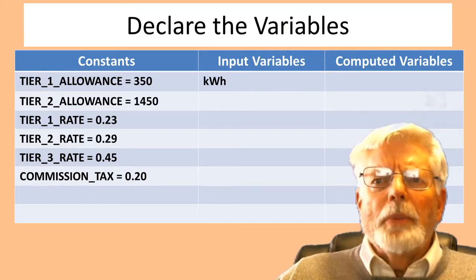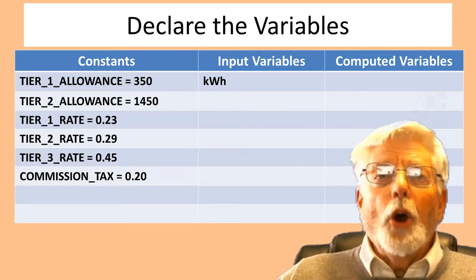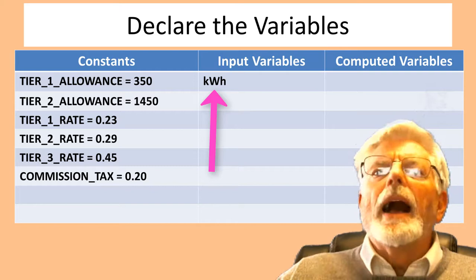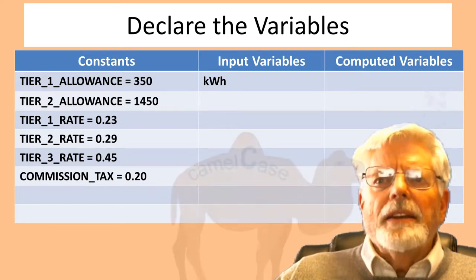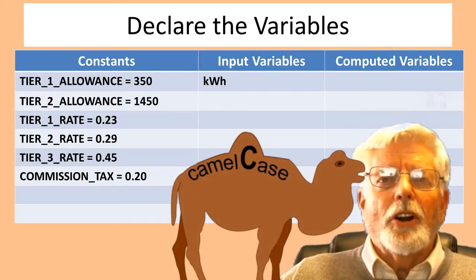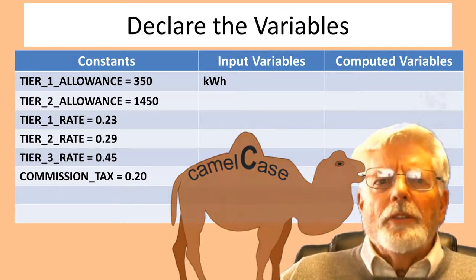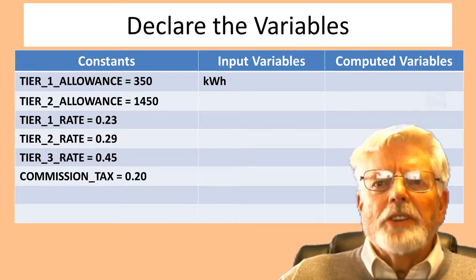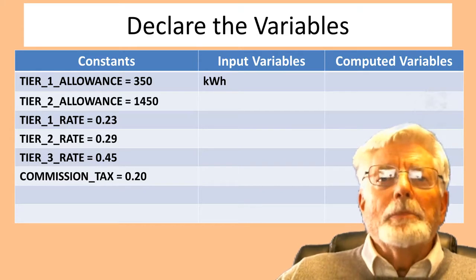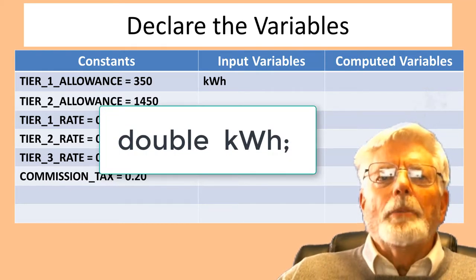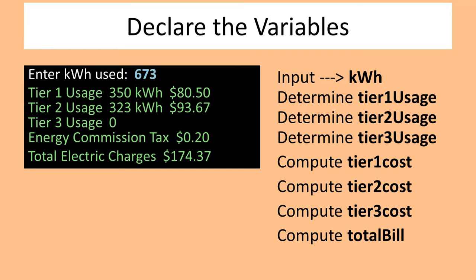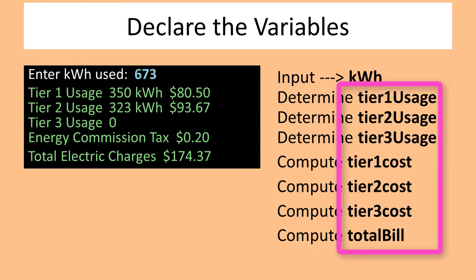Each variable in C and C++ must have a data type associated with it. The data type used in this program will be double, which can hold digits past the decimal. I need a variable for kWh — I named it kwh. I am starting each variable name with a lowercase character and using an uppercase letter to start each English word; this is called camel case. Make the names meaningful and don't start with a digit or include spaces. Other variables needed include: tier1Usage, tier2Usage, tier3Usage, tier1Cost, tier2Cost, tier3Cost, and totalBill.